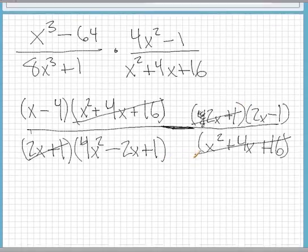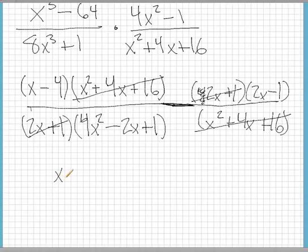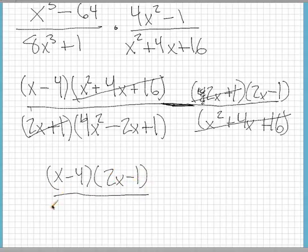So what we finally get is going to be (x - 4)(2x - 1) over 4x² - 2x + 1.